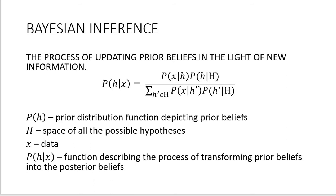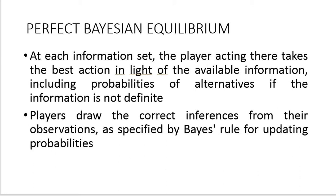To give a relatable example: let's say your prior belief is that all Italian movies are bad. You estimate the probability that a randomly picked Italian movie is bad as 100%. Then you observe real life data — you watch some Italian movies and notice that some are indeed bad, but some are pretty good. So you transform your beliefs and now estimate the probability as, say, 95%. This is what Bayesian inference is about.